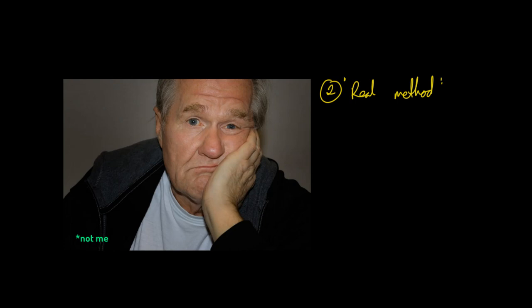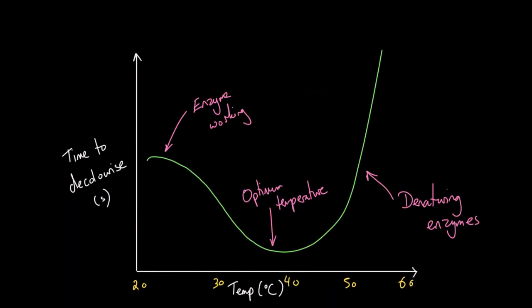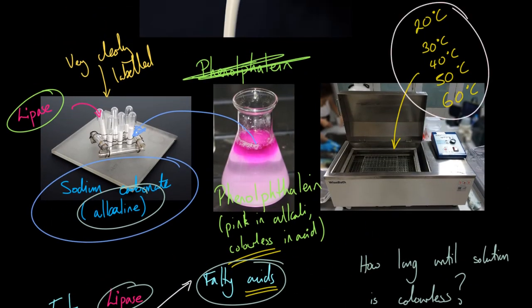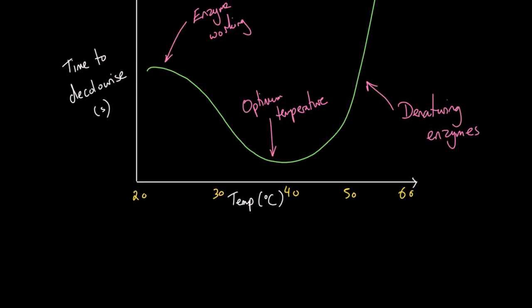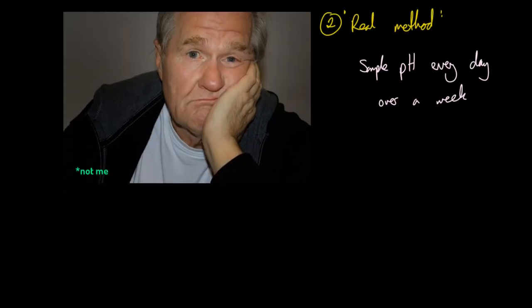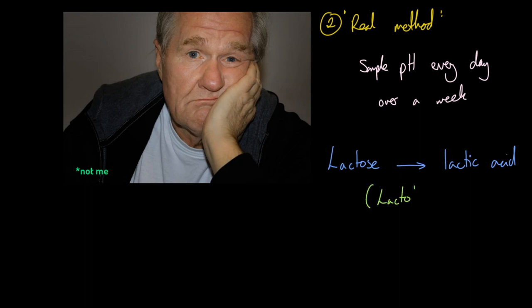The real method involves sitting around for a week and waiting for milk to decay naturally. You sample the pH every day over a week, with water baths set up at a variety of temperatures. What's happening is that bacteria in the milk are taking the lactose sugar and digesting it into lactic acid. The bacteria are called Lactobacillus.